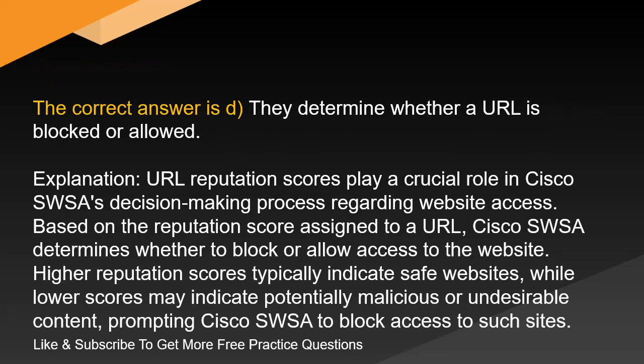The correct answer is D. They determine whether a URL is blocked or allowed. Explanation. URL reputation scores play a crucial role in Cisco SWSA's decision-making process regarding website access. Based on the reputation score assigned to a URL, Cisco SWSA determines whether to block or allow access to the website. Higher reputation scores typically indicate safe websites, while lower scores may indicate potentially malicious or undesirable content, prompting Cisco SWSA to block access to such sites.